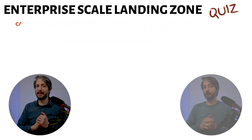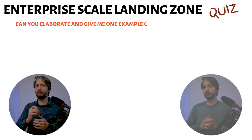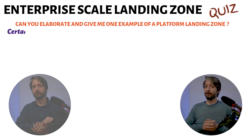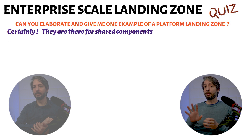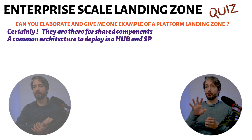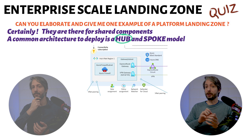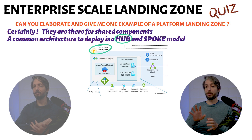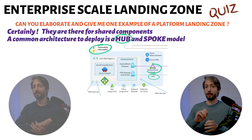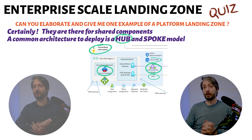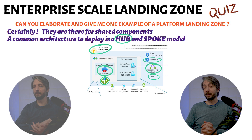Can you elaborate and give me one example of a platform landing zone? Platform landing zones are there for the shared components. A common architecture to deploy is a hub-and-spoke model. The hub is a separate subscription — in this case, it's considered a platform landing zone. You would put the connectivity to on-premise through either VPN or ExpressRoute, set up an Azure Firewall for all traffic to traverse, a DNS server with Azure Private DNS, and a shared application gateway.